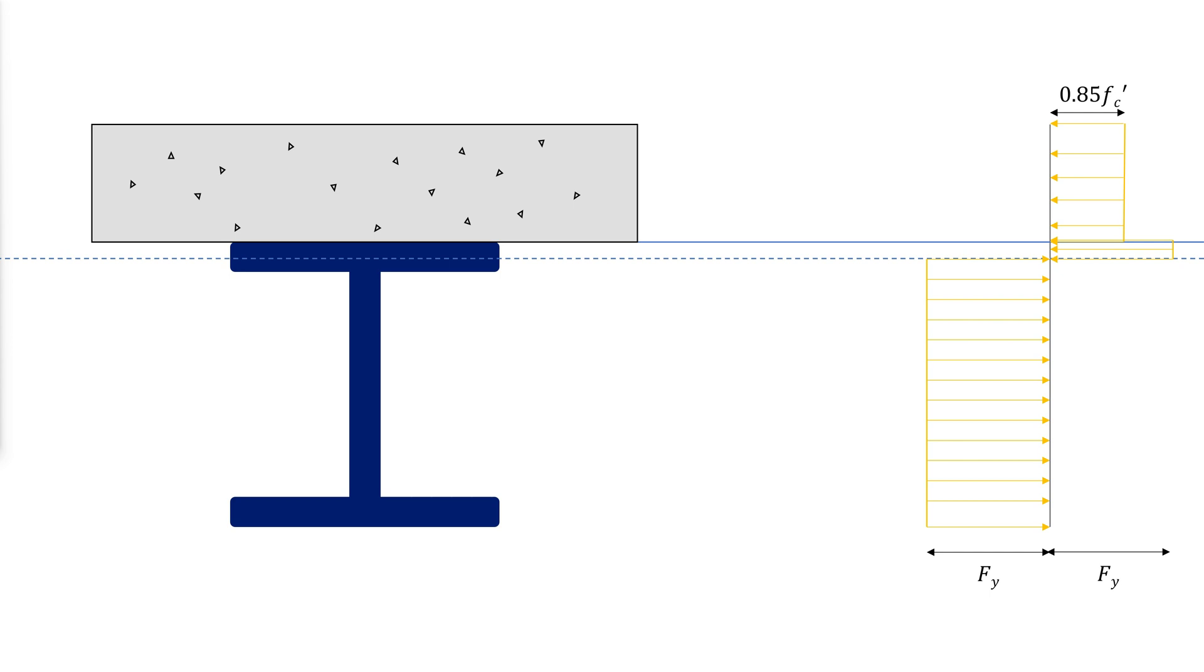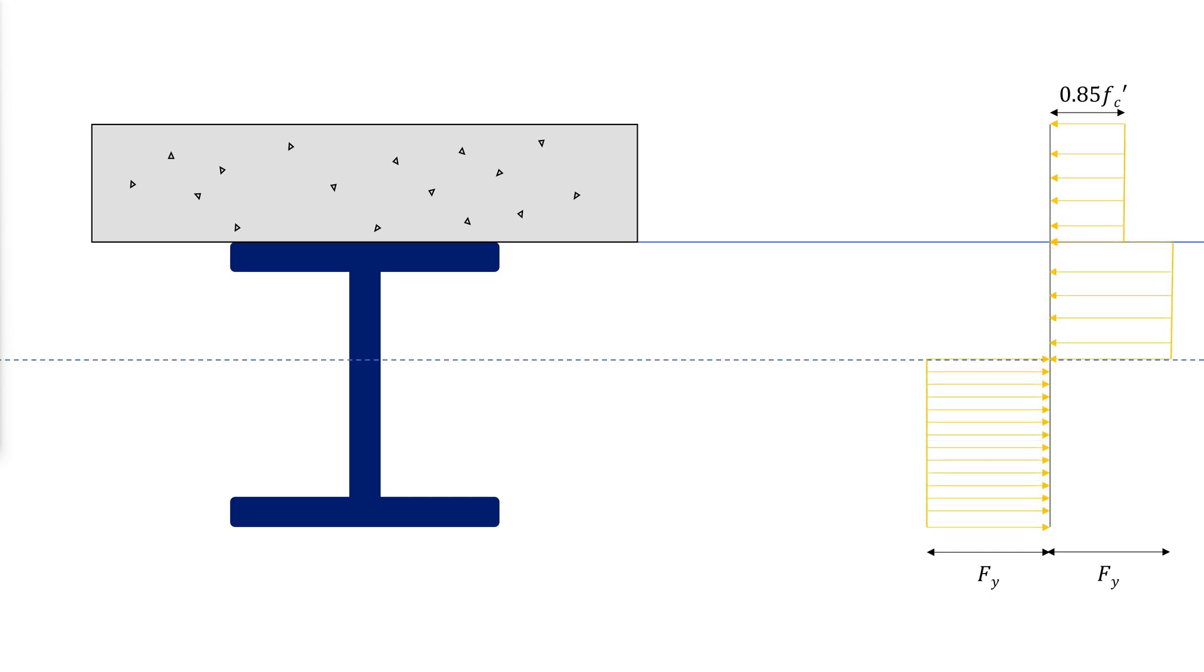In each case we can find the nominal moment capacity by computing the moment of the couple formed by the compressive and tensile resultants. This can be accomplished by summing the moments of the resultants about any convenient point.